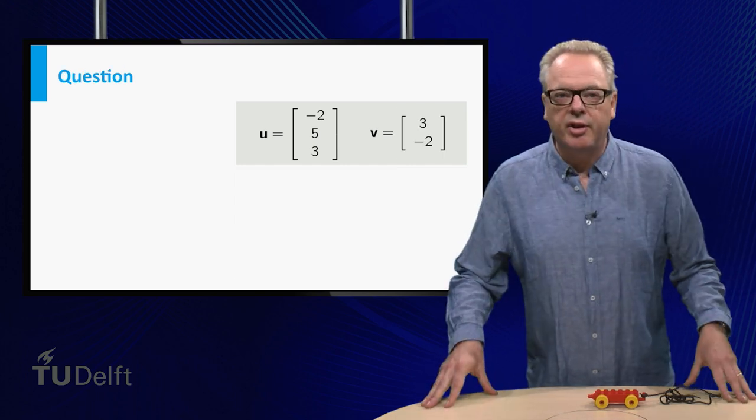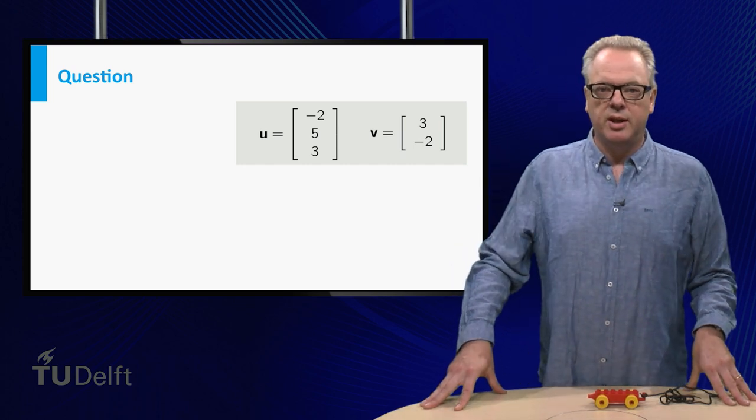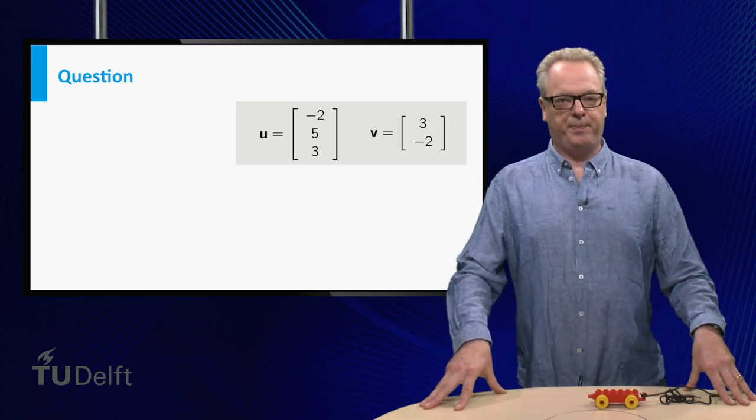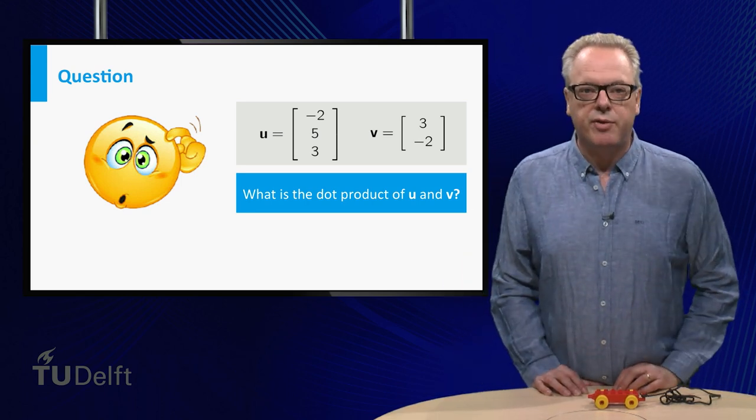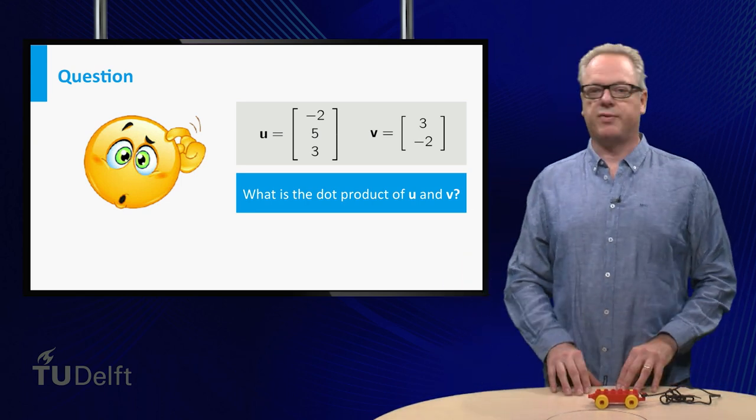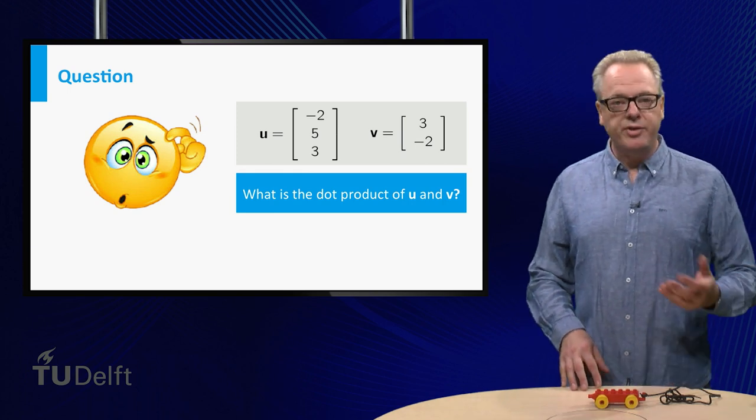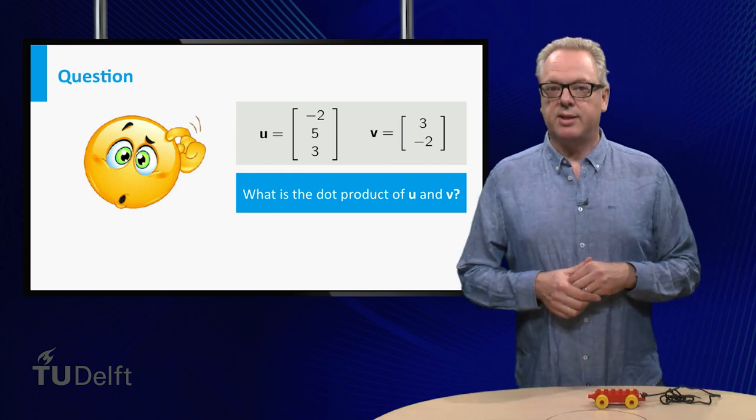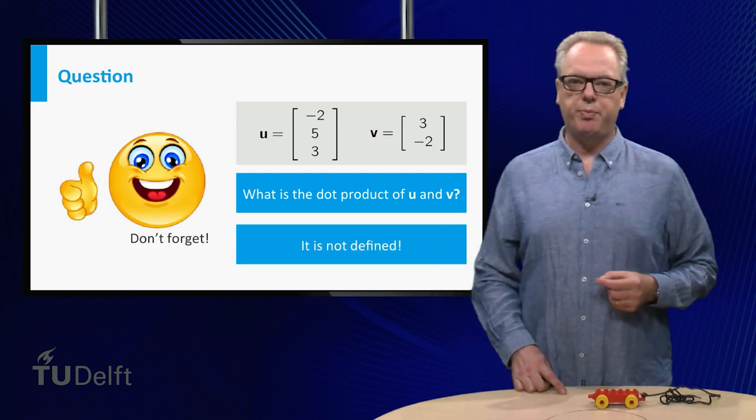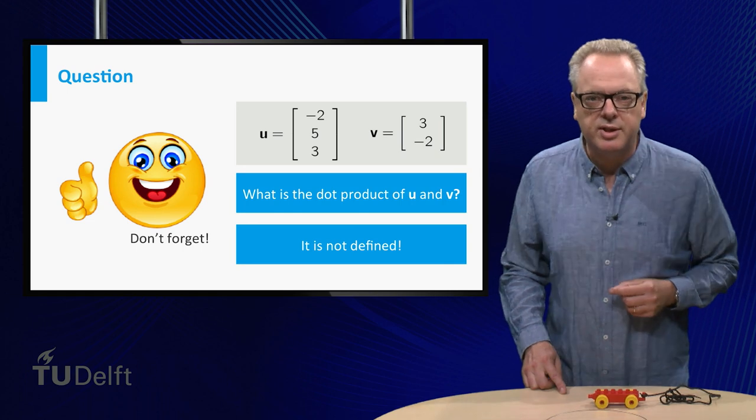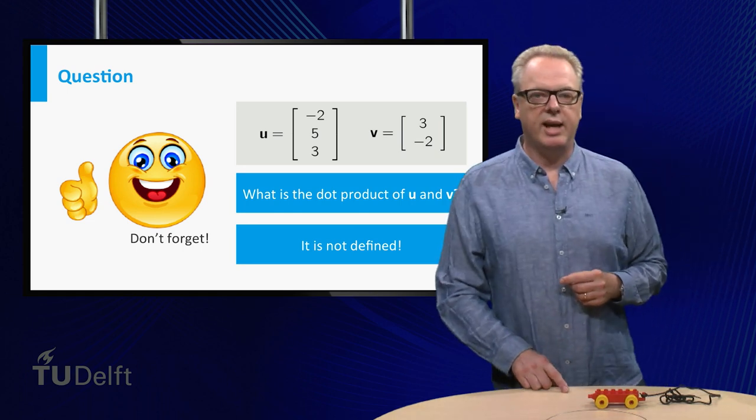In class, I would let you think about the question that's on the slide now. The dot product of a two and three-dimensional vector is asked for. The answer is that it is not defined. So remember, only dot products of vectors with the same dimension can be calculated.